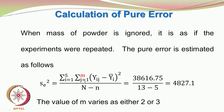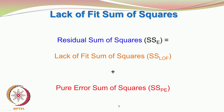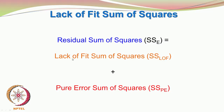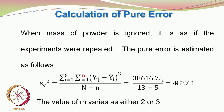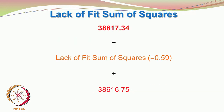We now find the lack of fit sum of squares to see whether our decision to exclude factor 2 from the modeling analysis was justified. The residual sum of squares is an additive combination of lack of fit sum of squares plus pure error sum of squares. We have 38617.34 as the residual sum of squares. We just calculated the pure error sum of squares as 4827.1, so the difference gives a lack of fit sum of squares of 0.59.